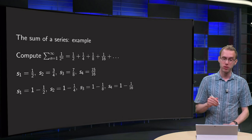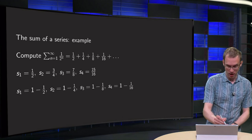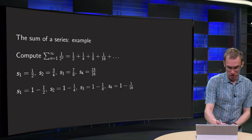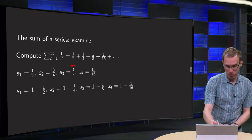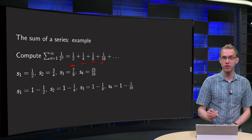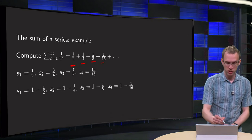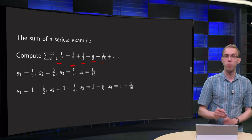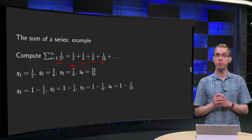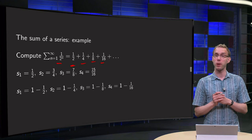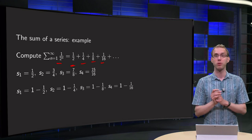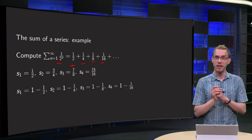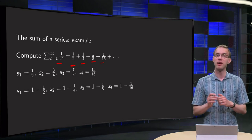Suppose we want to add 1/2 plus 1/4 plus 1/8 plus 1/16 — so symbolically 1 divided by 2 to the power n — and we want to add all those terms. Can we do that?